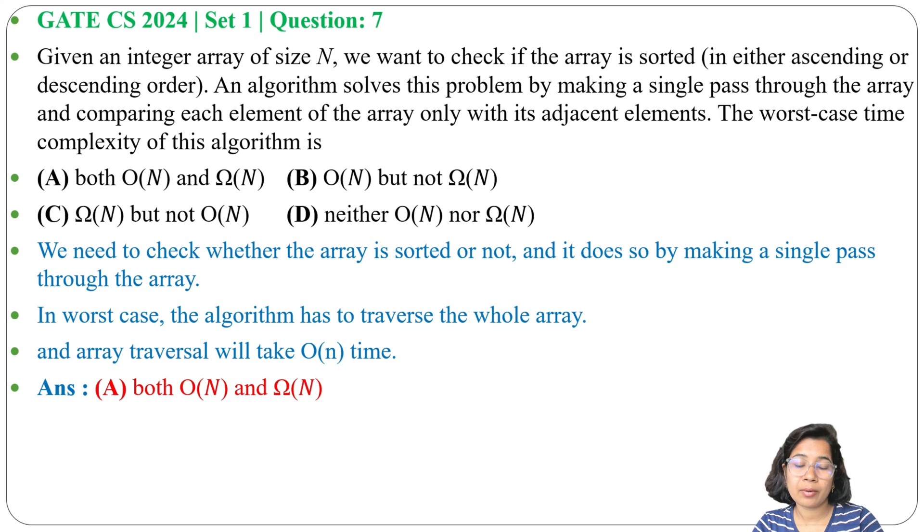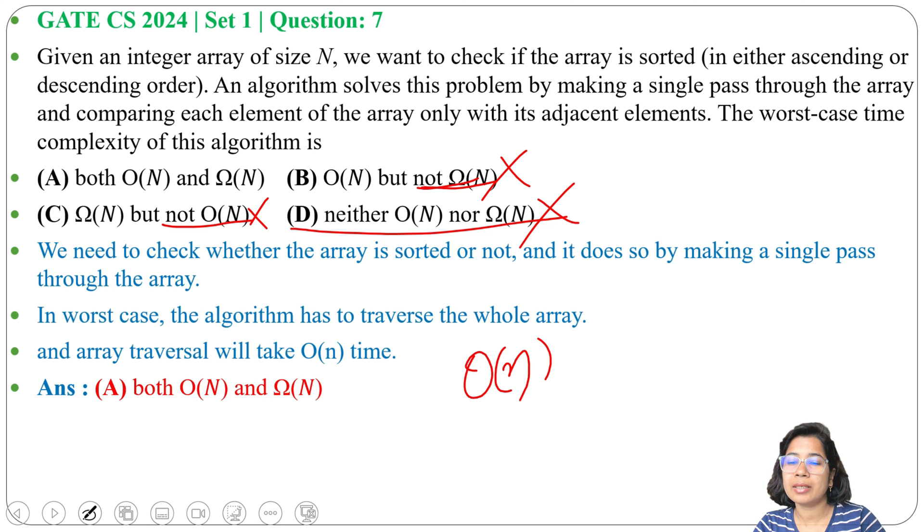In option B it's written O(n) but not Ω(n), due to this 'not Ω(n)' this is wrong. And option C, not O(n), due to this it is wrong. Option D, both are wrong, so it is wrong.